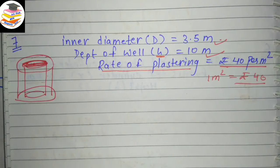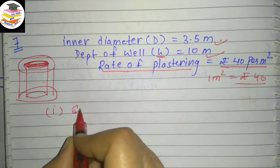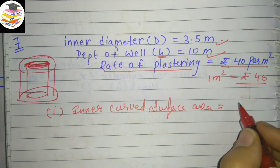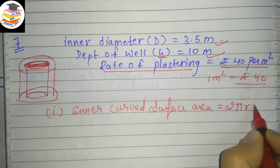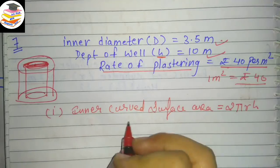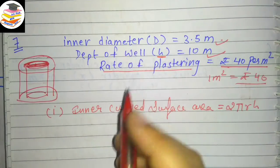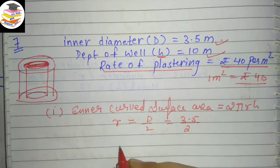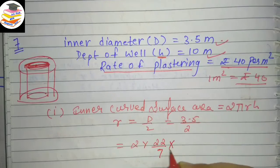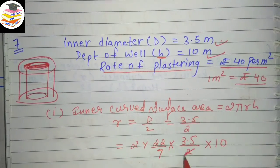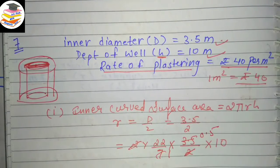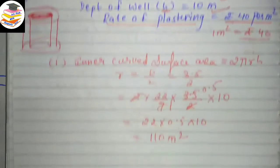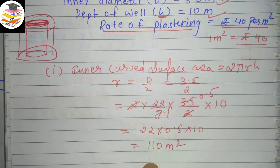First, Part 1: find the inner curved surface area. The formula is 2πrh. We have the diameter, so radius r = d/2 = 3.5/2. Putting into the formula: 2 × (22/7) × (3.5/2) × 10. The 2s cancel, 7 and 3.5 give 0.5, so we get 22 × 0.5 × 10 = 110 meter square. The inner curved surface area is 110 meter square.